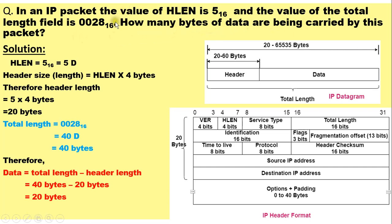In this numerical we are provided with the HLEN field value in hexadecimal and the total length field value in hexadecimal. We are supposed to determine the number of bytes which will be carried in the data part of the IP datagram. To solve such numericals you need to understand the structure of the IP datagram and the IP header.